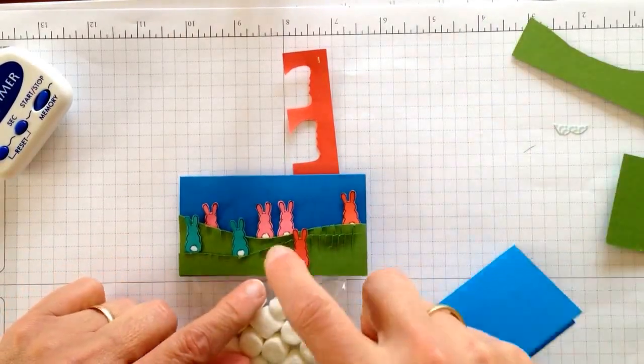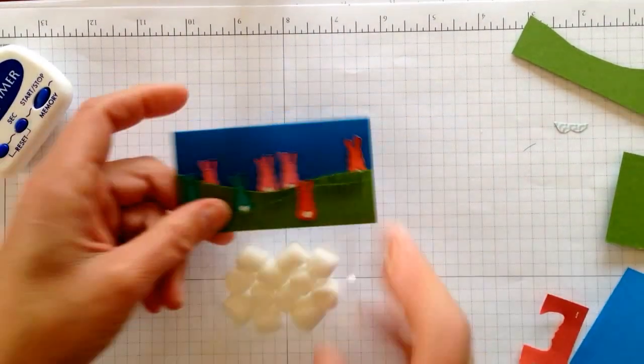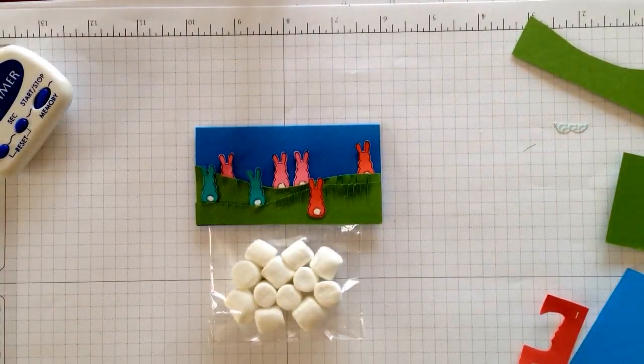Did the fringe scissors, stuck the bunnies on, taped everything together, and that is it. A quick little fun thing to give someone for Easter.